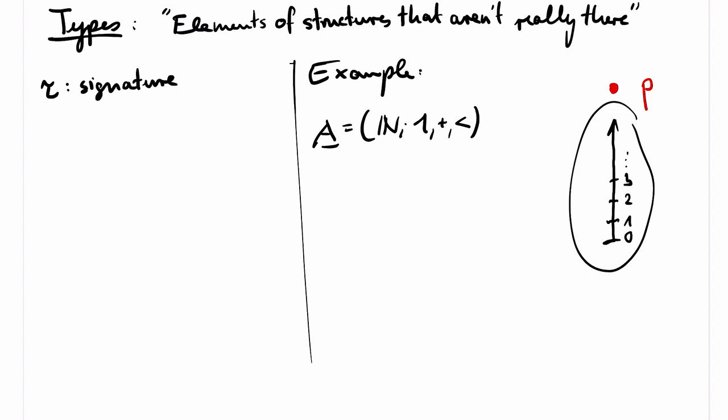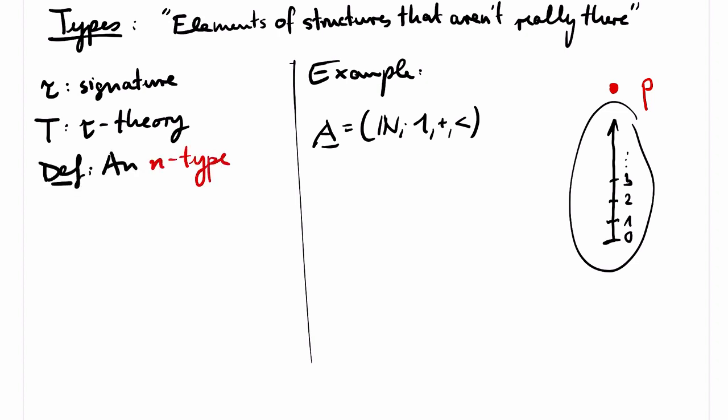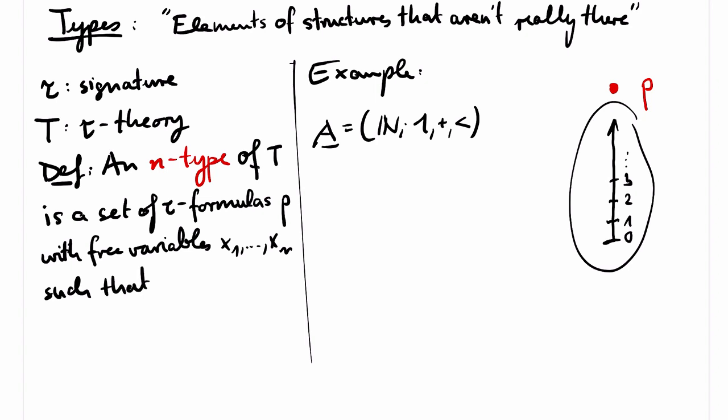Formally, we have a fixed signature tau, and we also fix a tau theory T. We now define n-types of T. If n is a natural number, then an n-type of T is a set of tau formulas p with free variables x1 up to xn, such that T union p is satisfiable. We have already defined what it means for a set of sentences to be satisfiable — there must exist a model of this theory. But here we have some free variables, so the definition of satisfiability is generalized: we require that there exists a structure B and an element in B for each free variable, so that when we replace the free variables by these elements, the respective sentences hold in B.